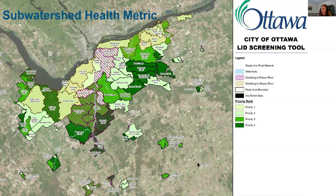Does the tool identify targets in terms of stormwater quality and quantity that might be beneficial for sizing the LIDs? No. That would be something that would happen after the tool is used. The idea behind the tool is it identifies the best locations for LID and what LID features would be possible.